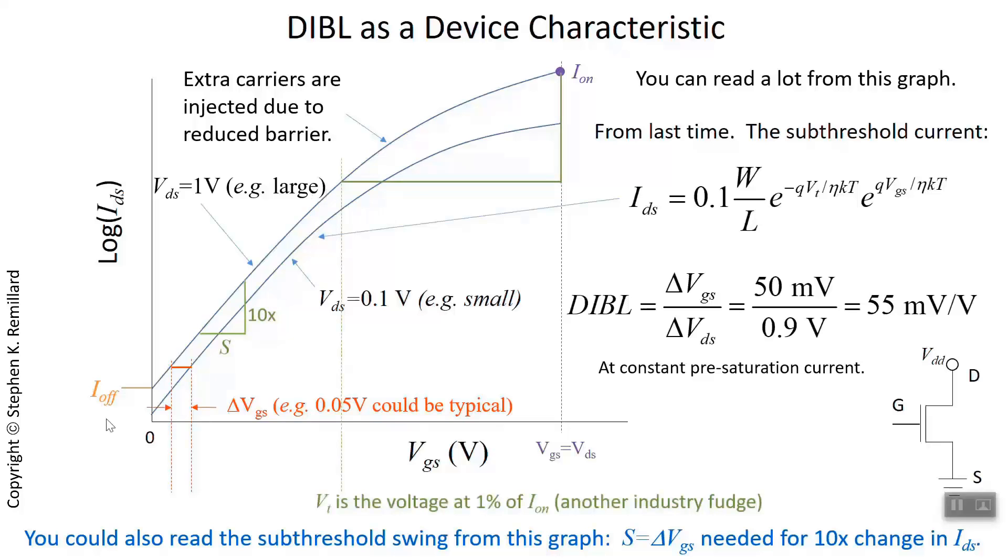Finally, the threshold voltage can be estimated from this graph. It's very hard to do. It's basically where the log current goes from being linear to not linear. There is another industry standard rule that the threshold voltage is reached when you're at 1% of the on current. So if you read the on current and you go down to 1% of it and go over and read the voltage, call that the threshold voltage. If you have a graph of log of drain source current versus gate source voltage, use that rule to estimate the threshold voltage.